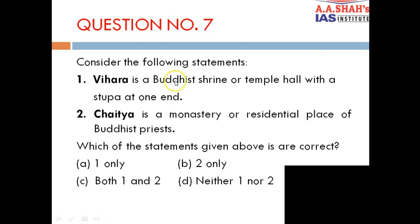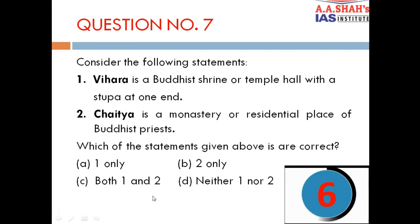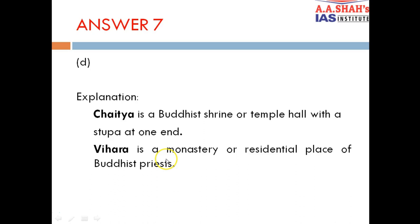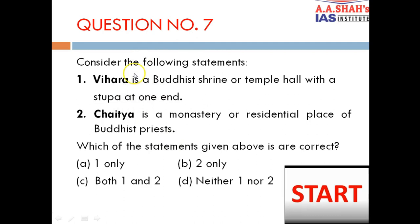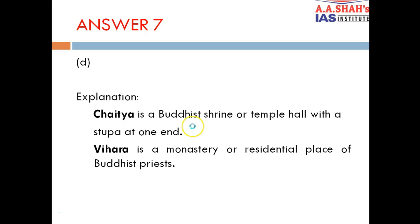Question 7: Consider the following statements. Statement 1: Vihara is a Buddhist shrine or temple hall with a stupa at one end. Statement 2: Chaitya is a monastery or residential place or Buddhist place. The correct answer is D — neither one nor two. The two have been interchanged — this is a common UPSC question style. Vihara is actually a monastery, and Chaitya is a Buddhist shrine or temple hall with a stupa at one end.